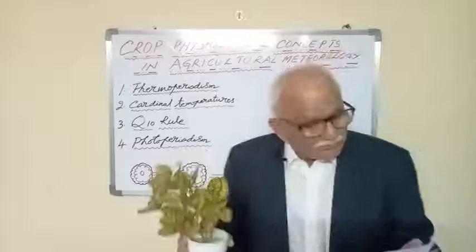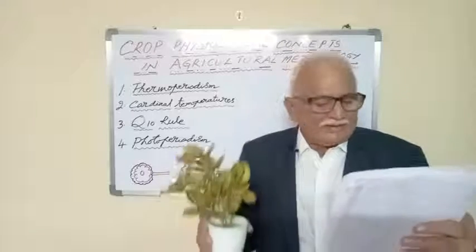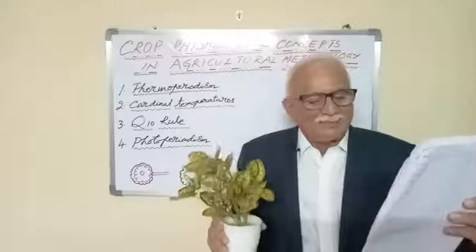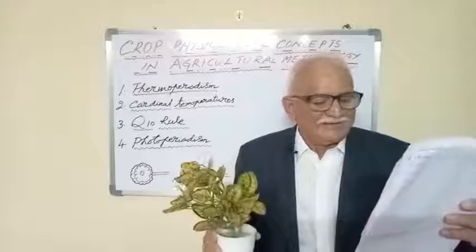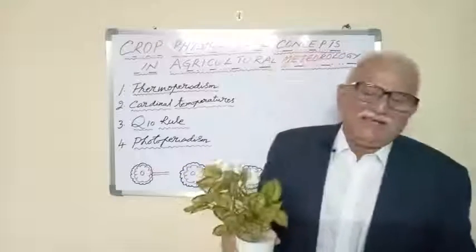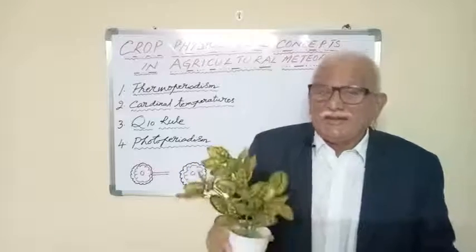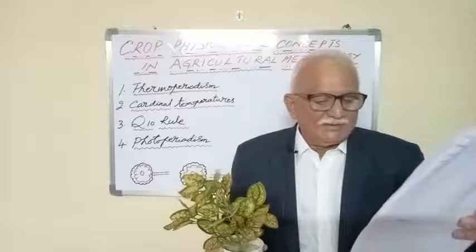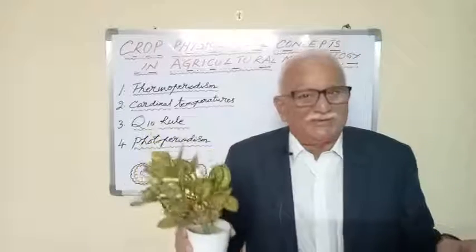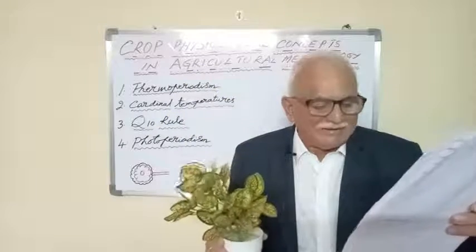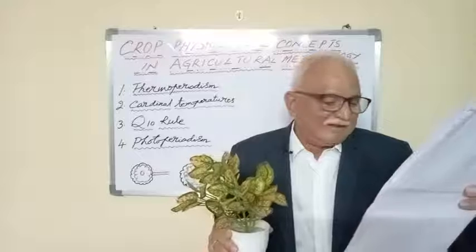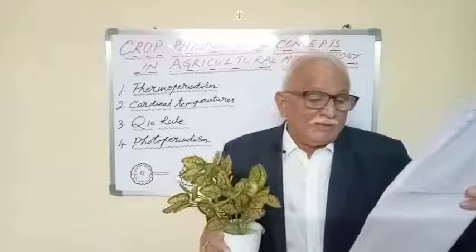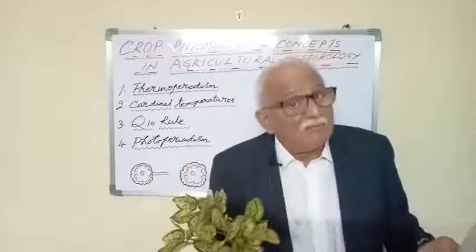Q10 represents the factor by which the rate of a reaction increases for every 10-degree rise in temperature — from 0 to 10, 10 to 20, 20 to 30, and so on. Van't Hoff's rule states that the speed of chemical reactions in crop plants is doubled at least for every 10 degrees centigrade temperature rise. This rule is an approximation that works best when temperatures approximate those conditions under which the reaction normally occurs.